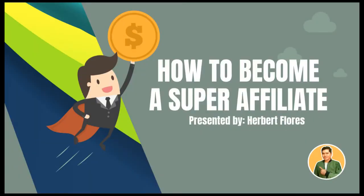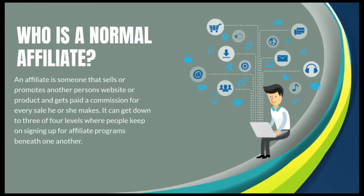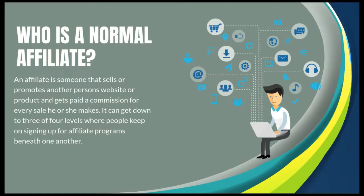In this short video you will learn how to become a super affiliate. If you're new with affiliate marketing or network marketing, then this video is for you. First, let's give you an idea of who is a normal affiliate. An affiliate is someone that sells or promotes another person's website or product and gets paid a commission for every sale he or she makes. It can go down to three or four levels where people keep on signing up for affiliate programs beneath one another.